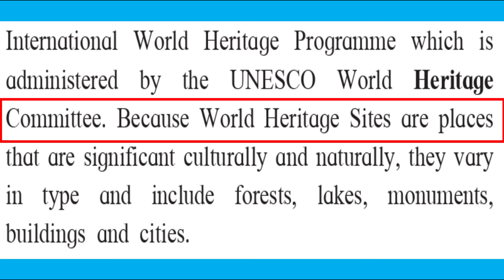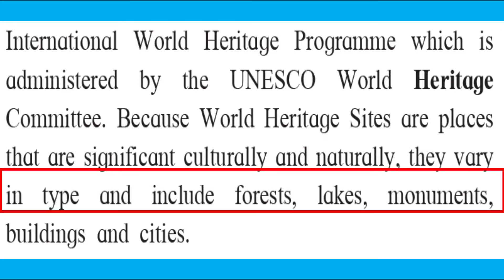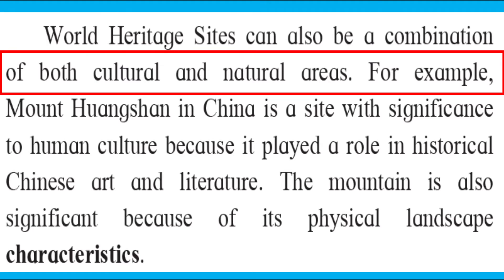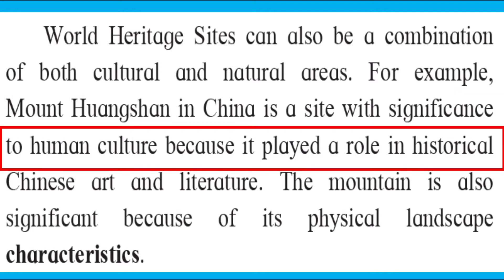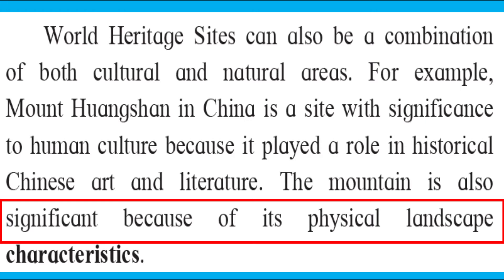Because World Heritage Sites are places that are significant culturally and naturally, they vary in type and include forests, lakes, monuments, buildings and cities. World Heritage Sites can also be a combination of both cultural and natural areas. For example, Monument Huangshan in China is a site with significance to human culture because it played a role in historical Chinese art and literature. The mountain is also significant because of its physical landscape characteristics.